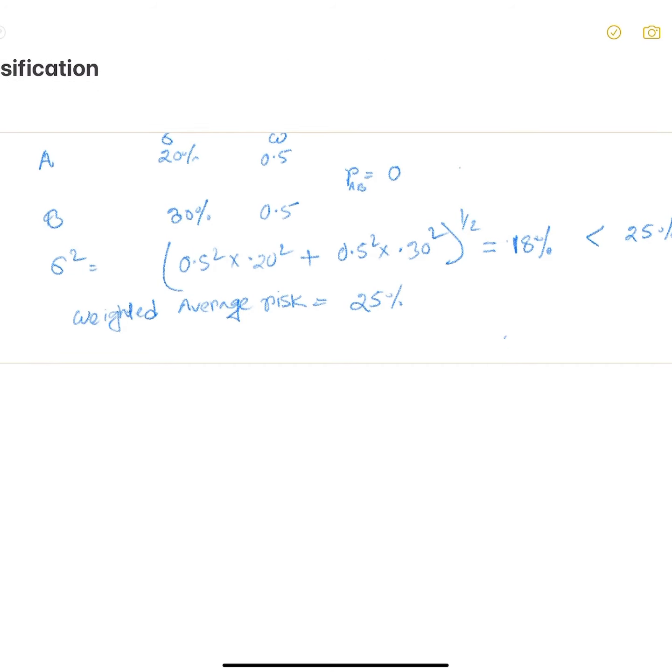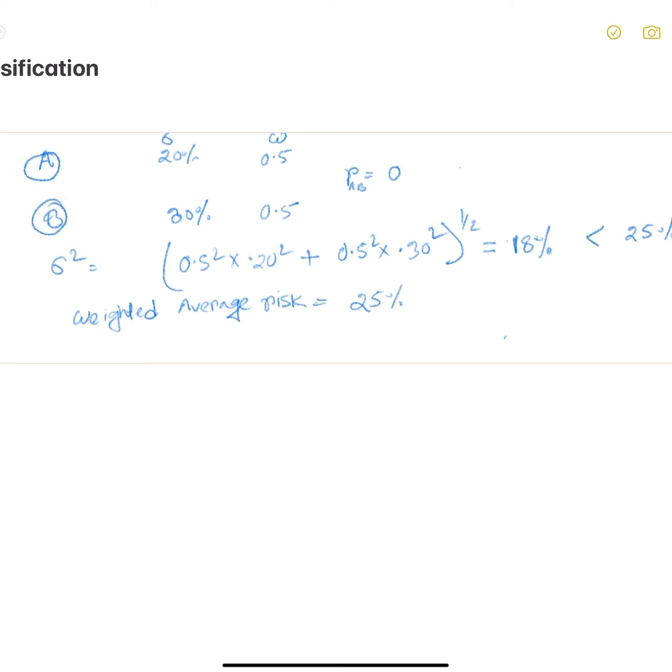For example, if we have two assets A and B, asset A has 20% risk, asset B has 30% risk, and we equally invest 50% in asset A and 50% in asset B. We assume these two assets have zero correlation, which means they are uncorrelated assets. If we invest 50% in each, our overall portfolio risk or standard deviation will be approximately 18%.